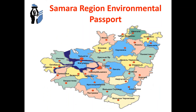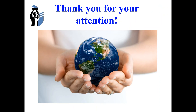In the Samara region, as well as in other regions of Russia, there is the Samara Region Environmental Passport, which contains complete information about all environmental factors — both natural and anthropogenic — that affect the state of the ecosystems of our region every year. Thank you for your attention.